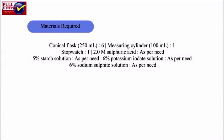Materials required: 6 conical flasks of 250 ml each, measuring cylinder of 100 ml, a stopwatch, 2.0 M sulphuric acid, 5% starch solution, 6% potassium iodate solution, and 6% sodium sulphite solution.